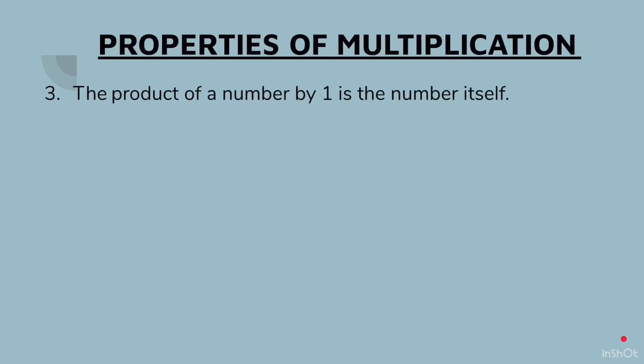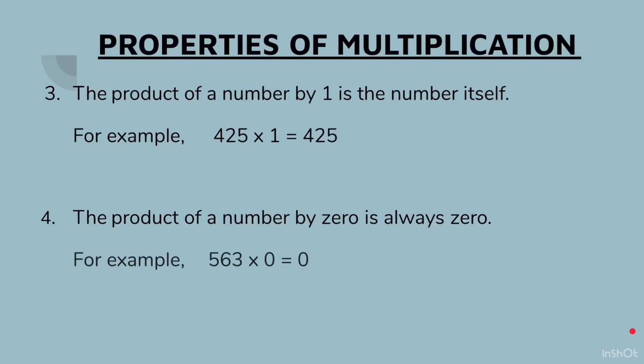Third property: the product of a number by 1 is the number itself. Example: 425 × 1 equals 425. Fourth property: the product of a number by 0 is always 0. So whichever number we take, when we multiply it by 0 we will always get 0. Example: 563 × 0 equals 0.